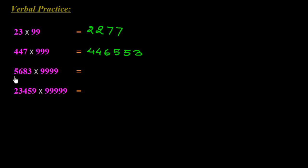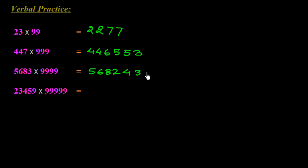Now multiply 5683 with 9999. One less than 5683 is 5682, which goes on the left side. Subtract 5682 from 9999: 9 minus 2 is 7, 9 minus 8 is 1, 9 minus 6 is 3, 9 minus 5 is 4. So we write 4317 on the right side. The answer is 56824317.